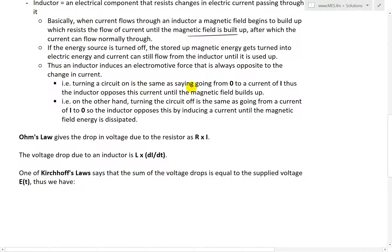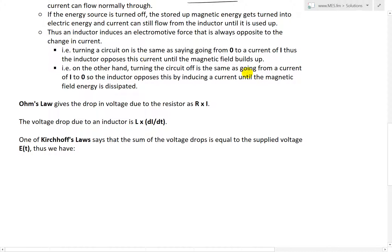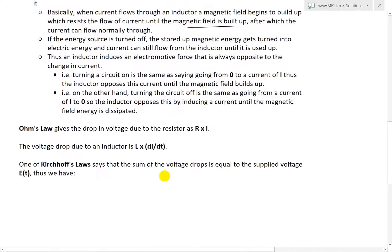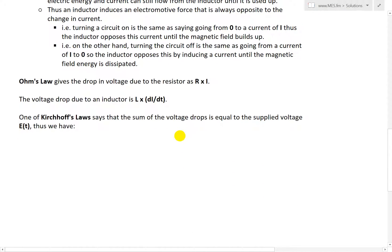For example, turning a circuit on is the same as saying going from zero to current of I. Thus, an inductor opposes this current until the magnetic field builds up. On the other hand, if you're turning off the circuit, it's the same as going from a current of I to zero, so you're dropping in current. The inductor opposes this by inducing a current until the magnetic field energy is dissipated. Even though there's no current from the source, there is still some current coming from the inductor.